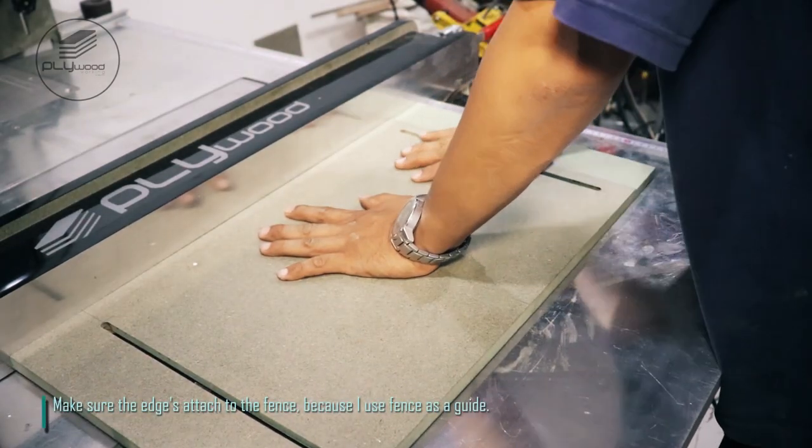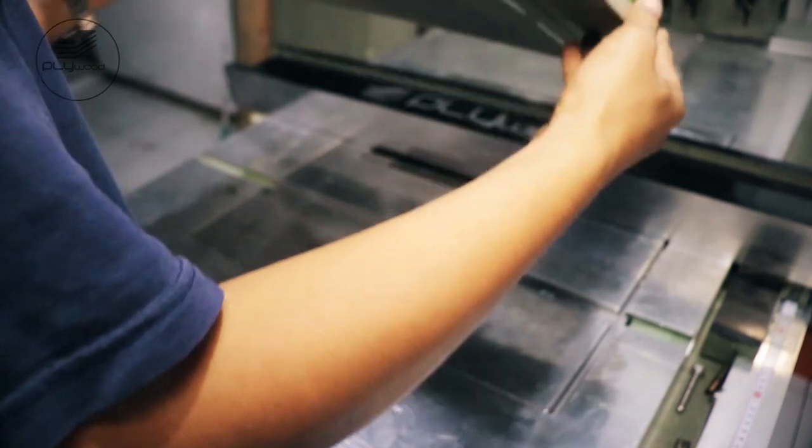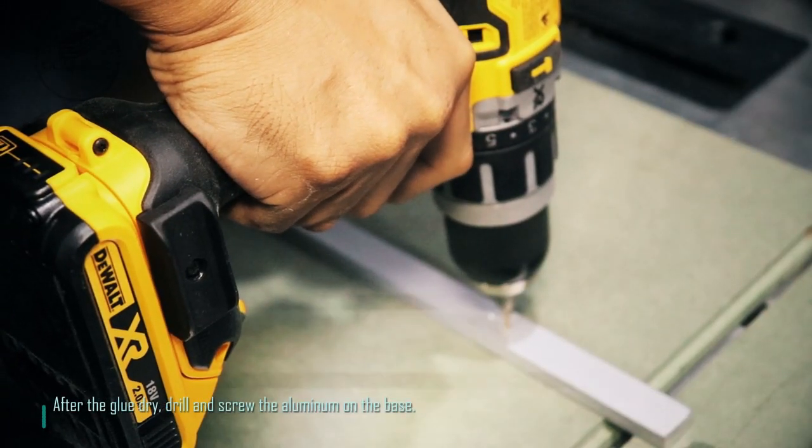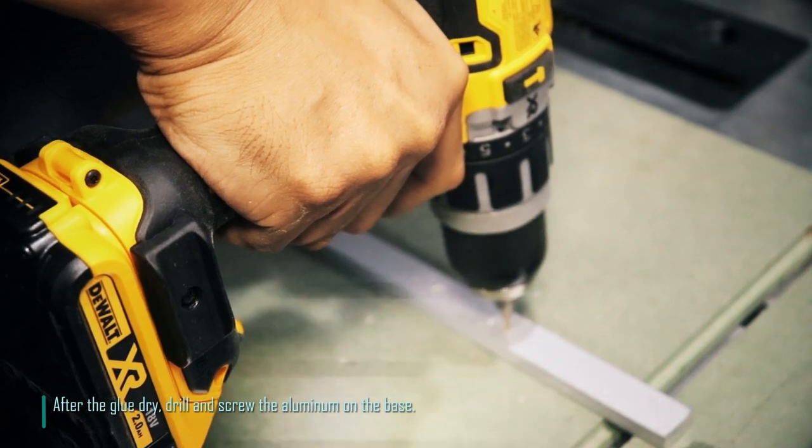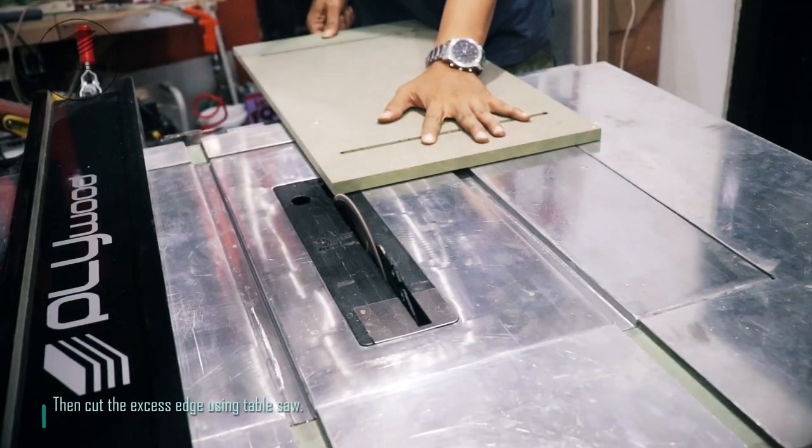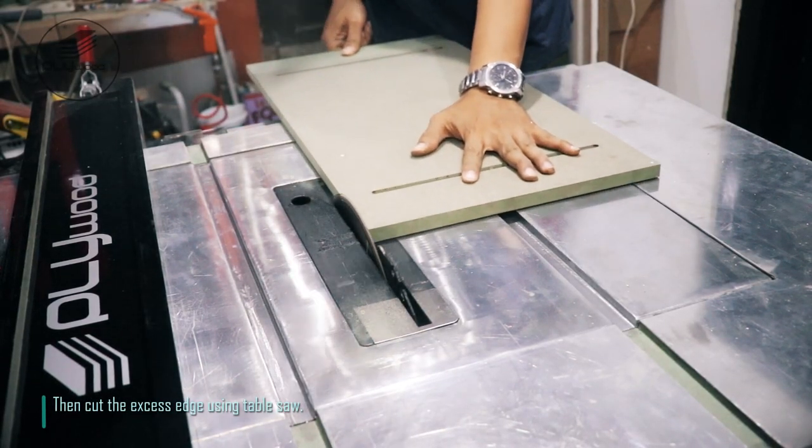Make sure the edges attach to the fence, because I use fence as a guide. After the glue dries, drill and screw the aluminum on the base. Then, cut the excess edge using table saw.